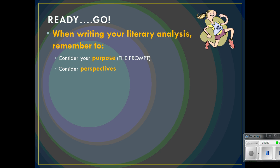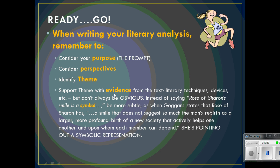We're going to start building on other types of lenses, such as the Marxist lens, the feminist lens, the archetypal lenses, and the psychoanalytical lenses. You're definitely going to identify theme and follow and carry a theme and support that throughout. You're going to support the theme with evidence from the text, and evidence from the text is going to include literary techniques and literary devices. A little tip though: don't always be so obvious.